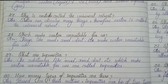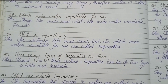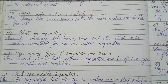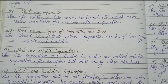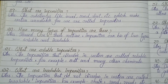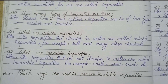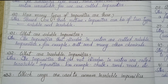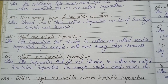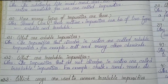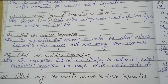Number 28: Which things make water unsuitable for us? Things like mud, sand, dirt etc. make water unsuitable for us. Number 30: How many types of impurities are there? Based on their nature, impurities can be of two types — soluble and insoluble. Number 31: What are water soluble impurities? The impurities that dissolve in water are called soluble impurities, for example salt and many other chemicals. Number 32: What are water insoluble impurities? The impurities that do not dissolve in water are called insoluble impurities, for example chalk, sand, mud etc.